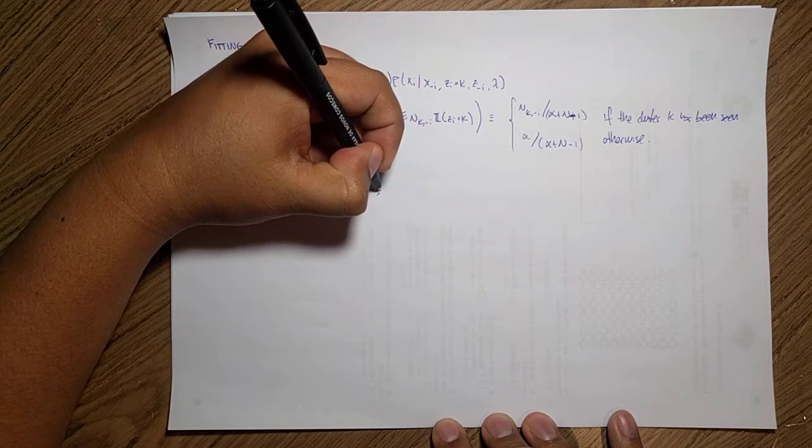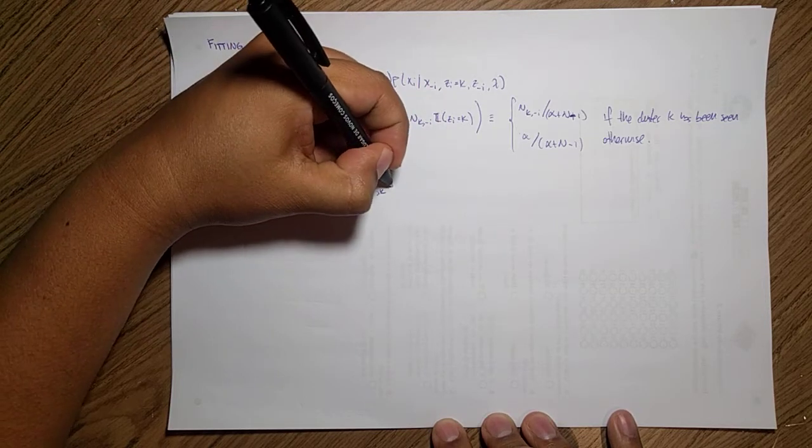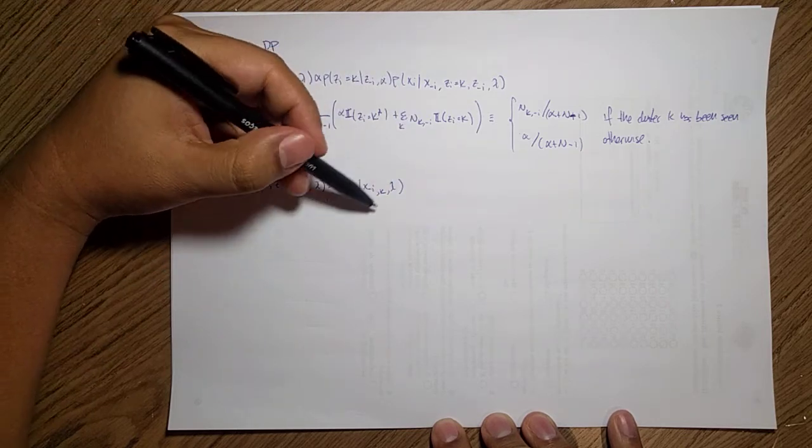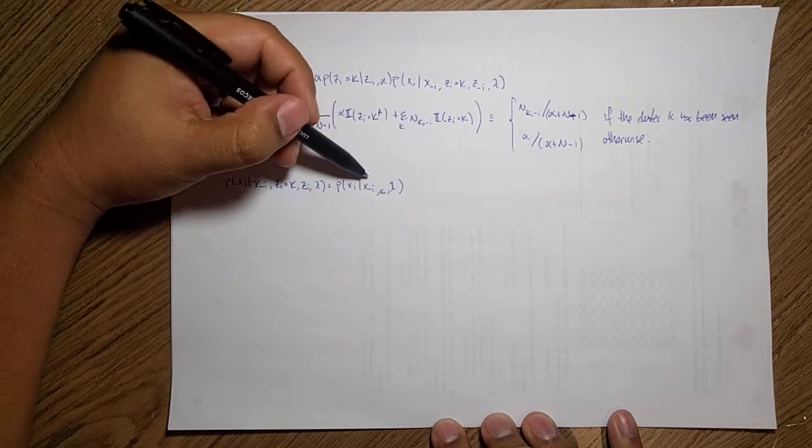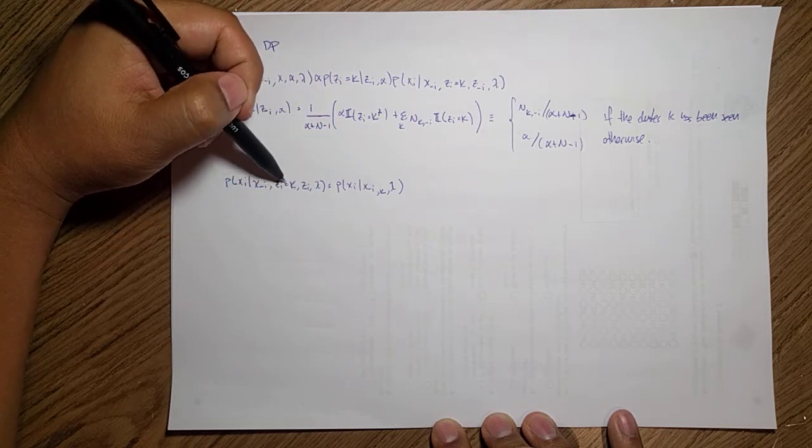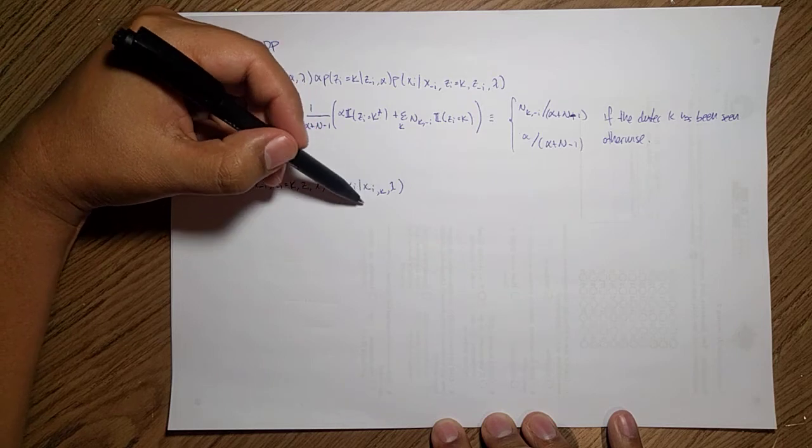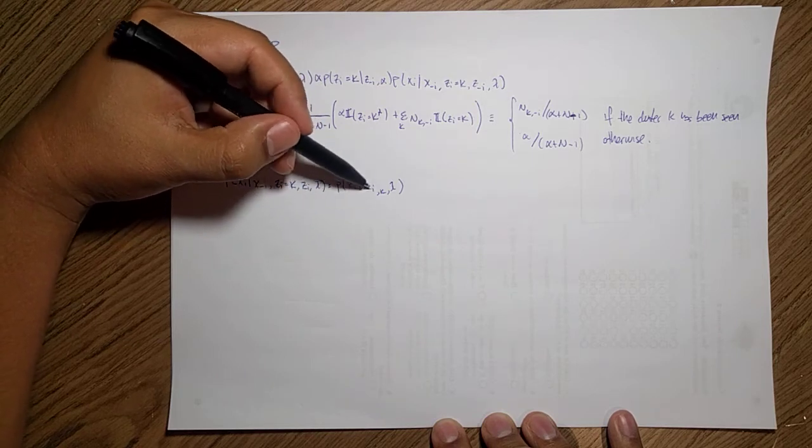This is the p(xi) given the other data that are not i, given my cluster, given my other variables, and given my lambda.